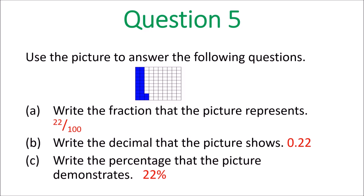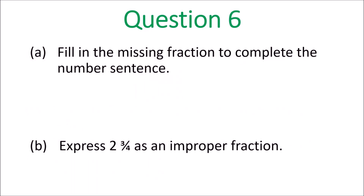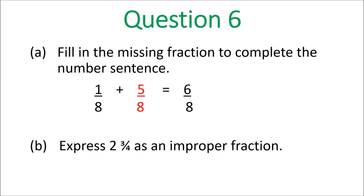Question 6: fill in the missing fraction to complete the number sentence. You're adding, so it's one eighth plus five eighths is six eighths — yes, the missing fraction was five eighths. Now express two and three quarters as an improper fraction: four twos are eight, eight and three is eleven — eleven fourths. That would be the answer for B when you write it as an improper fraction.